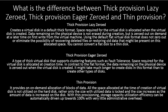What is the difference between thick provisioning lazy zeroed, thick provisioning eager zeroed, and thin provisioning? Thick provision lazy zeroed creates a virtual disk in a thick format. Space required is allocated when the virtual disk is created. Data remaining on the physical device is not erased during creation but is zeroed out on the first write from the virtual machine. Using this format does not eliminate the possibility of recovering old data from allocated space, and you cannot convert a flat disk to a thin disk.